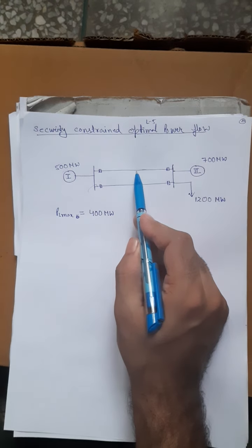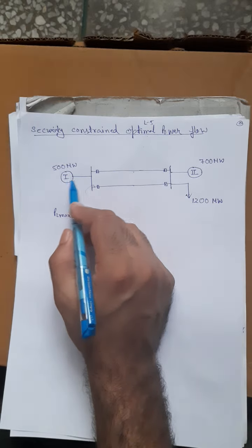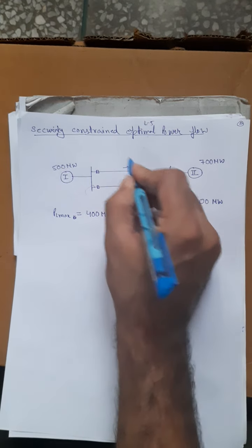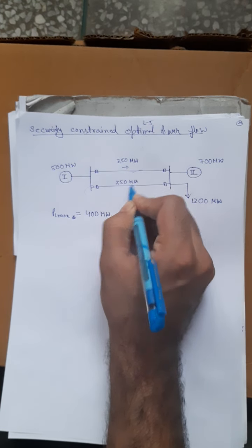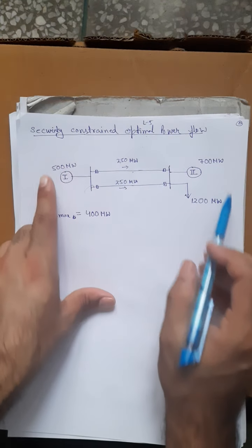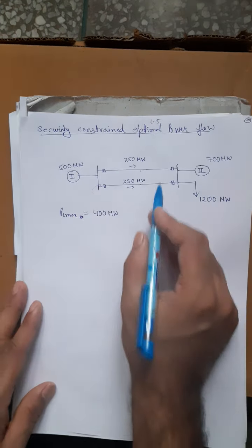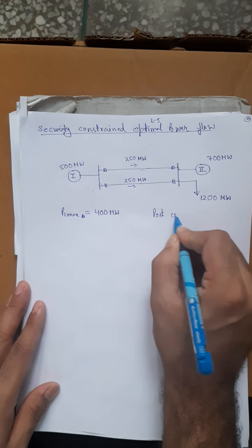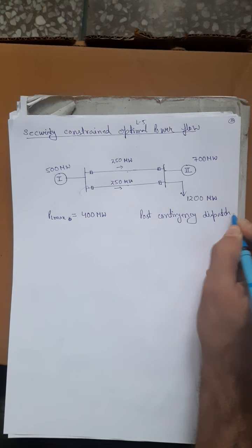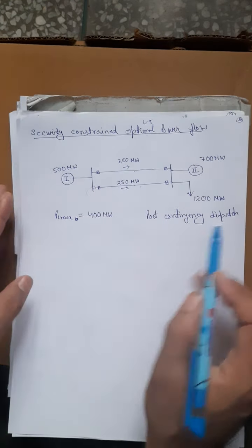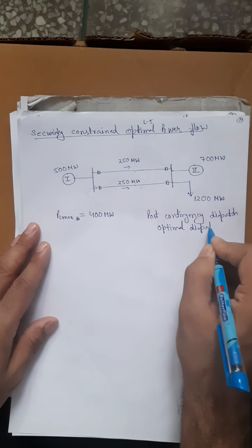Since the lines are parallel, power is equally distributed: 250 MW flows through each line. The maximum capacity is 400 MW per line, so at 250 MW each there is no problem. This is the optimal pre-contingency dispatch — the cost of generation is minimum.